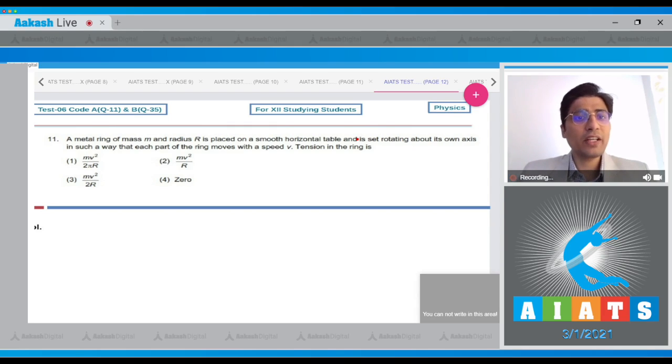Question 11 says a metal ring of mass m and radius r is placed on a smooth horizontal table and is set rotating about its own axis in such a way that each part of the ring moves with a speed v. The tension in this ring has to be calculated.